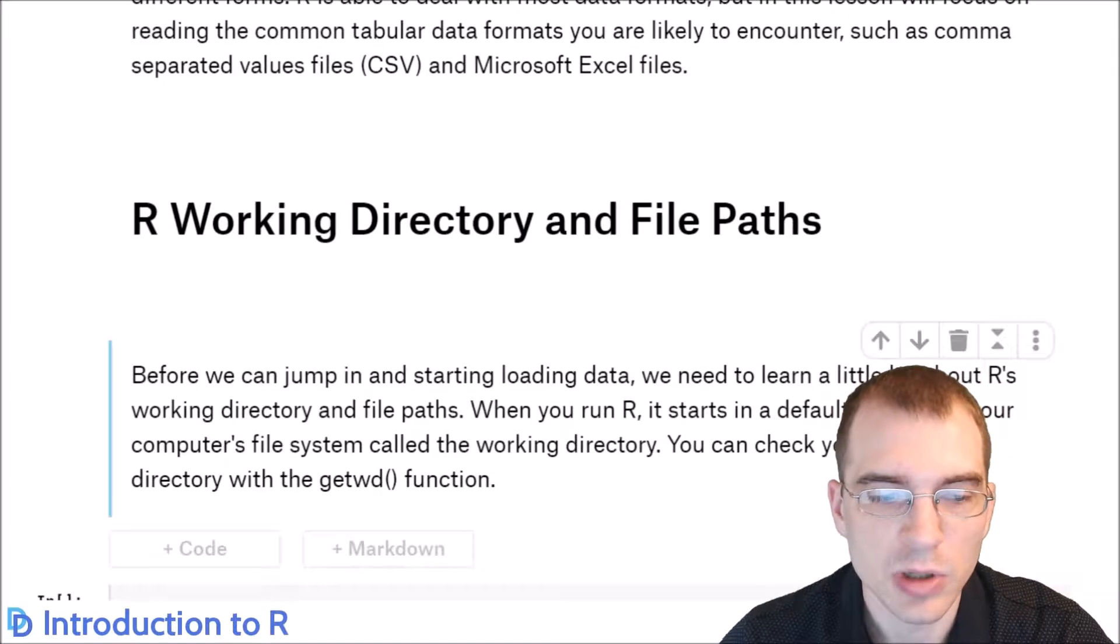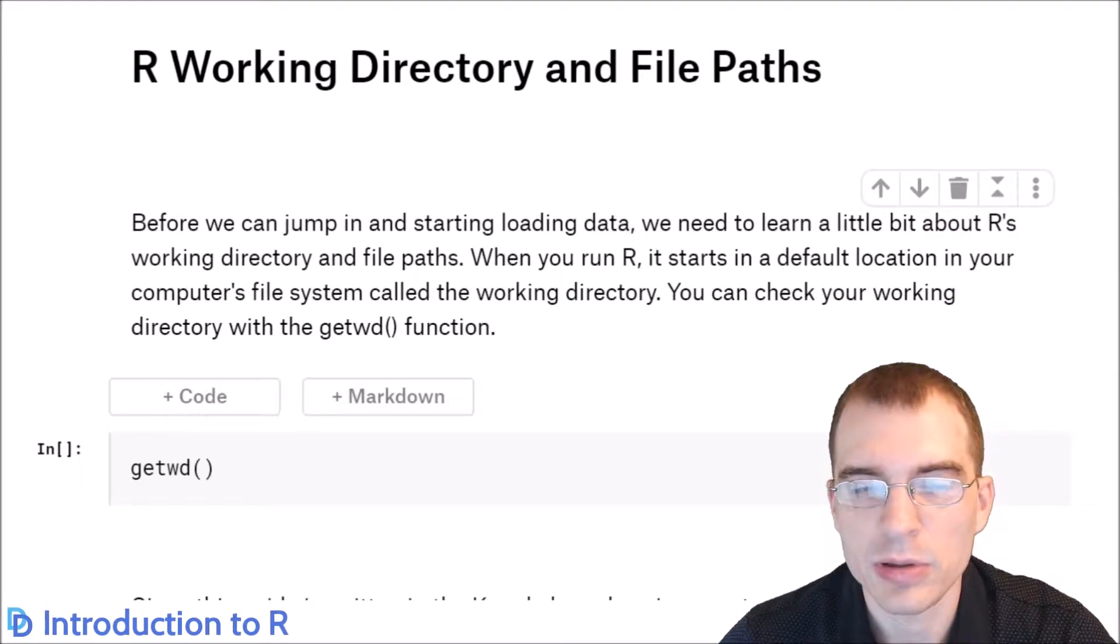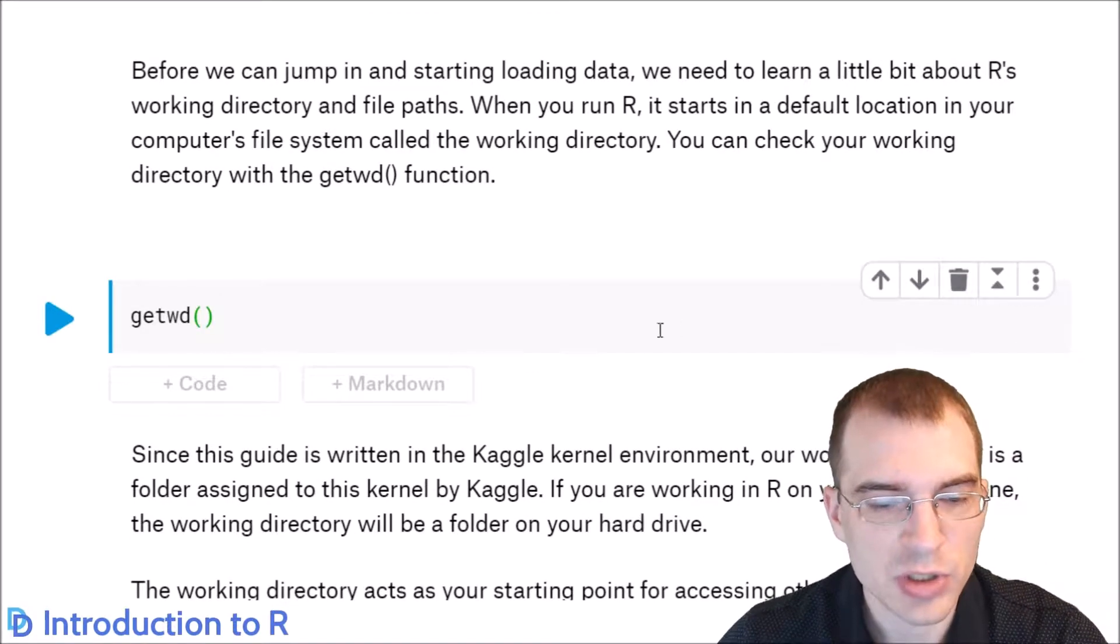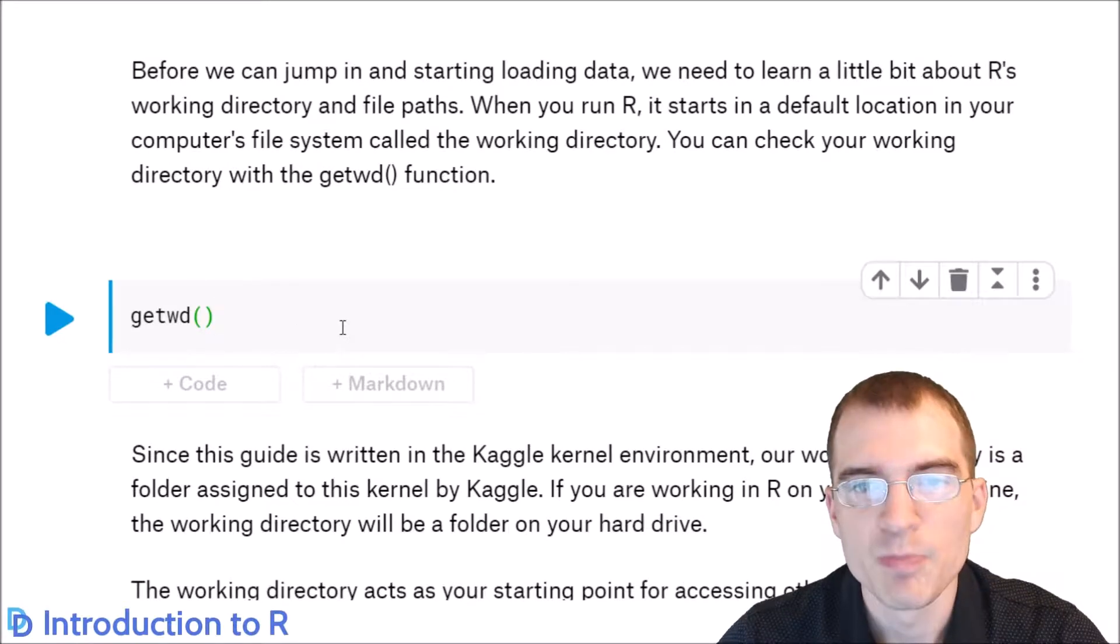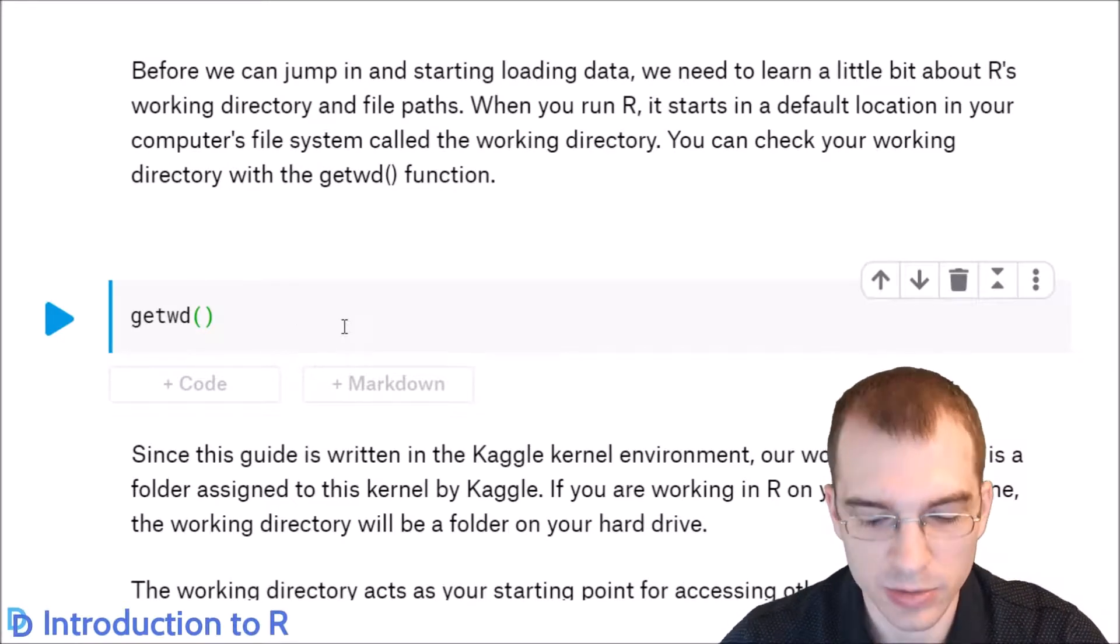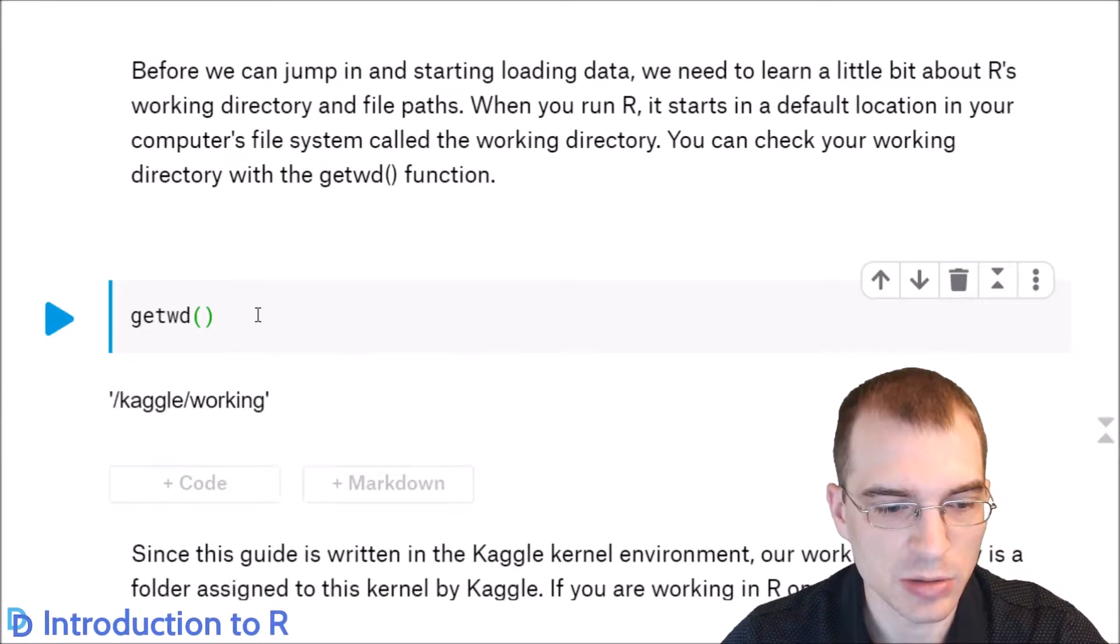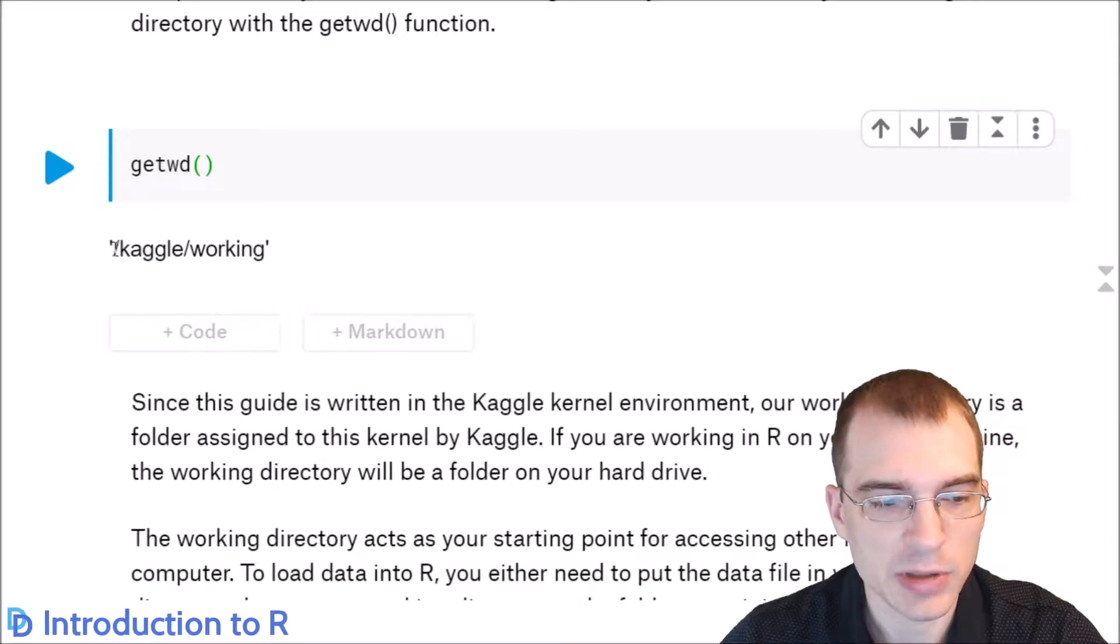To start out with, we're going to look into working with the directories and file paths in R. When you're loading data, you generally want the data to be in whatever directory you're currently working in, or at least you'll need to know the file path to the data you're loading. This first function, getwd, shows you the current directory that you're working in. Since we're in the Kaggle kernel environment, this will actually be something on Kaggle's cloud. You can see in our Kaggle cloud environment, there's the Kaggle/working directory.